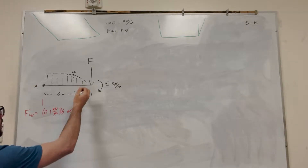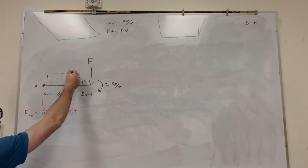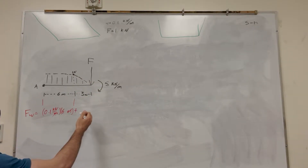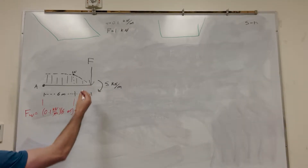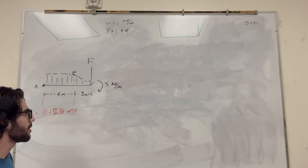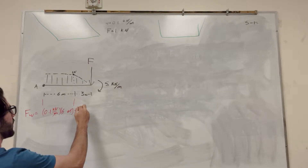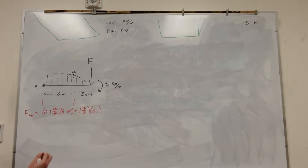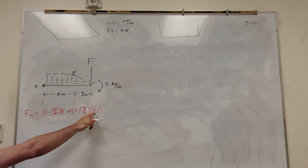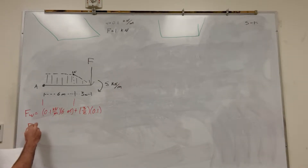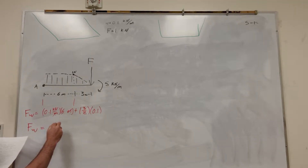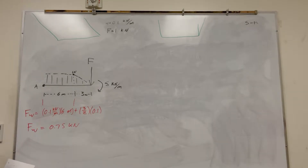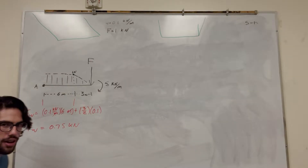Then let's go to the next part. This next part is a triangle — a right triangle — so it's 3 meters, but the area of a triangle is half of that, so we take 3 divided by 2 and multiply by 0.1. The units are meters times kilonewtons per meter, so you get force W equal to 0.15 kilonewtons. Combined, the total force is 0.75 kilonewtons.